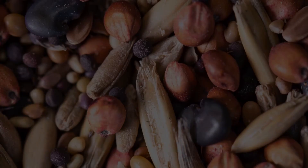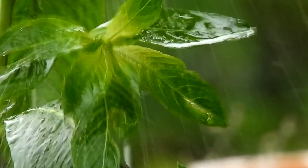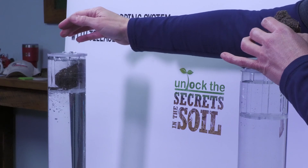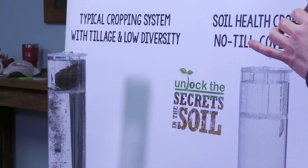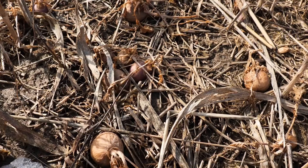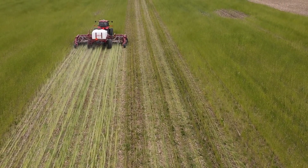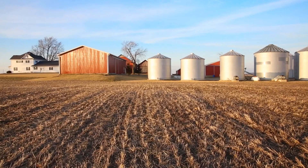Soil health is defined as the continued capacity of soil to function as a living, breathing ecosystem that sustains plants, animals, and humans. That's a pretty big definition when you think about it, so let's take a minute to break that down. When I say continued capacity, I mean that soil is constantly renewing itself — it's able to recover from a disturbance that happens on the landscape, continually taking care of itself.